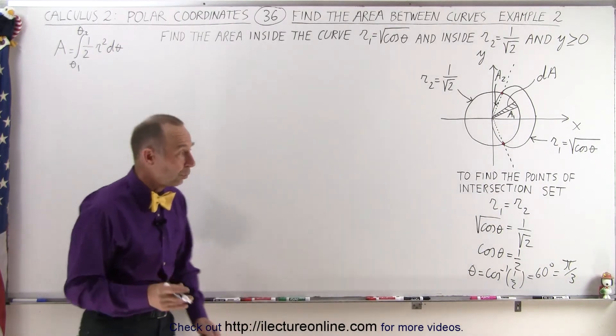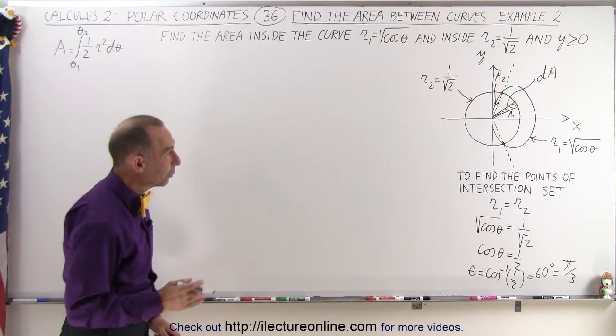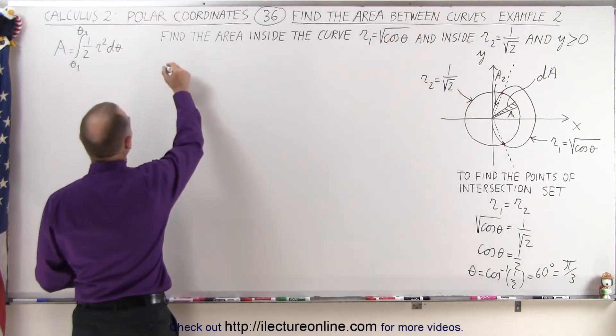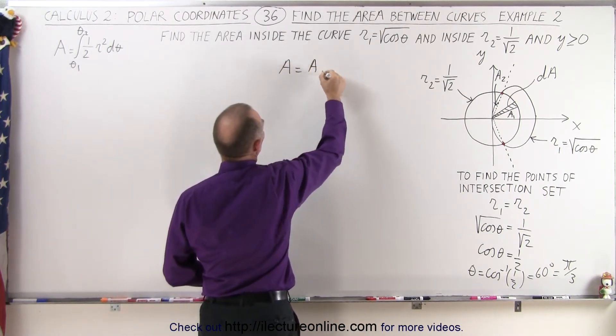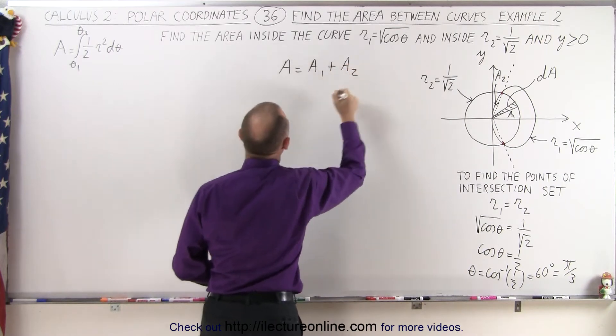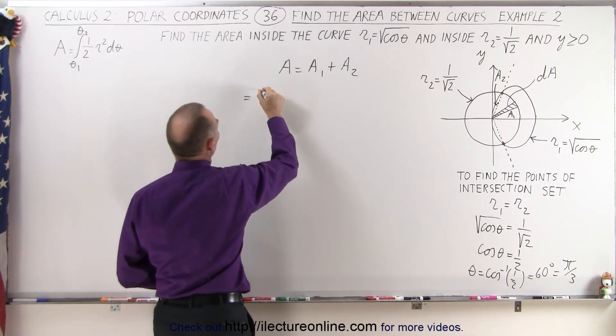So now that we know what our limits of integration are, we can go ahead and solve the problem. We can say that A is going to be equal to the sum of A1 plus A2, which means it's equal to 1 half times the integral.